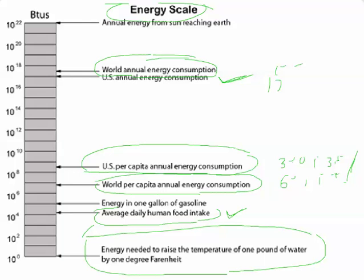Look at this: the annual energy reaching Earth from the sun, free of cost, is roughly 10 to the 22, which is about 22,000 to 23,000 times more than what the entire world consumes in a year. So think about this — if we are getting 22,000 times more energy than what we consume, free of cost every year, then why are we worried about energy?